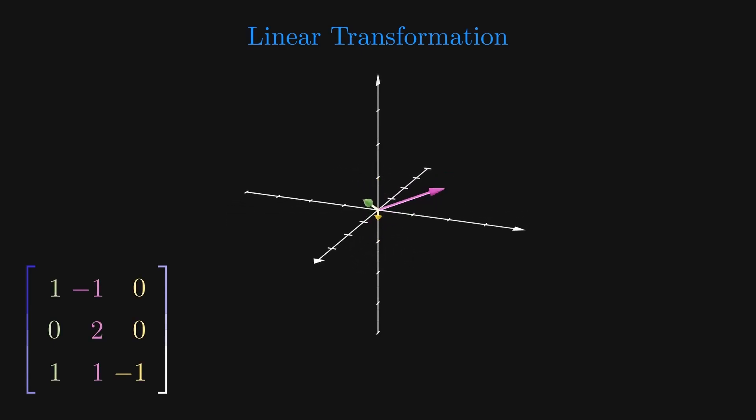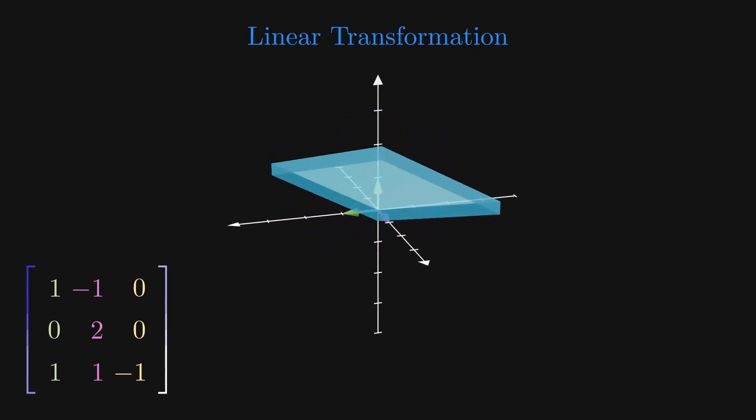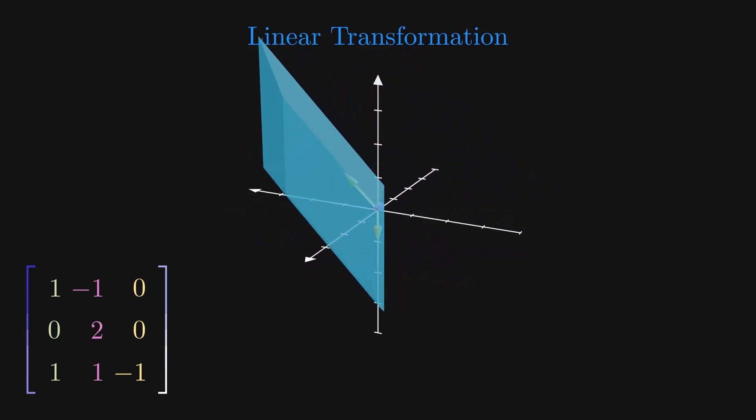Now if we know how to transform our unit x, y, and z vectors under the transformation, we should be able to transform every point in 3D space with this transformation. And that is exactly what a linear transformation is.